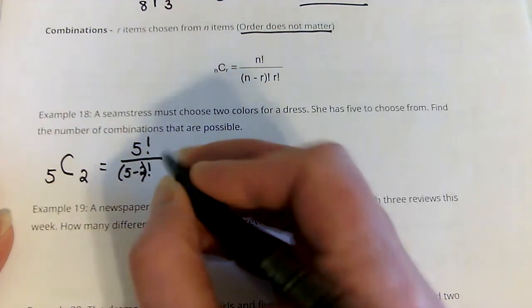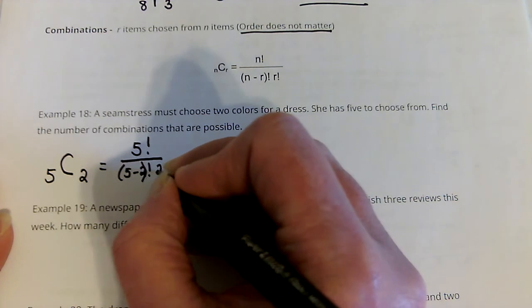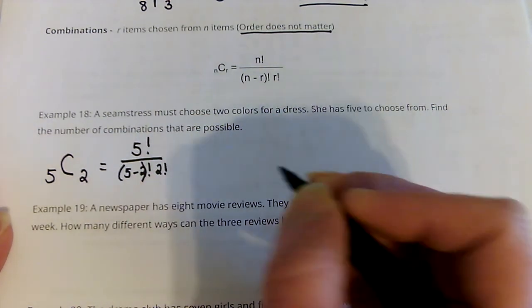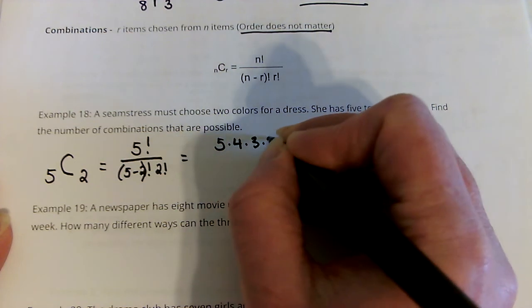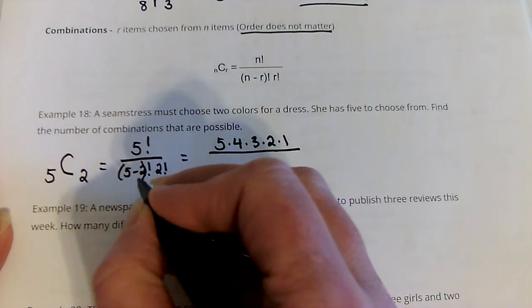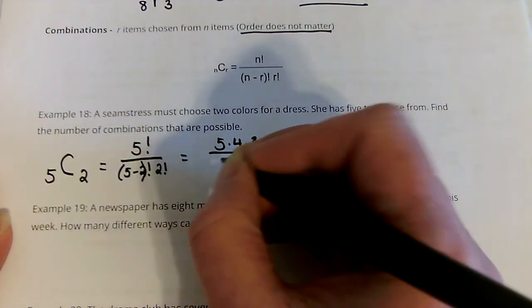So, if I'm doing this with the formula, I'd have 5 factorial over 5 minus 2 factorial, and then it says r factorial, so I'd also have 2 factorial down there as well.